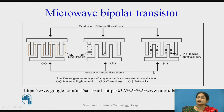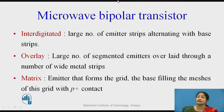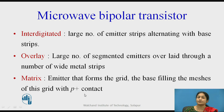These are the base metallizations and these are the emitter metallizations. In summary: in the interdigitalized geometry, large numbers of emitter strips alternate with base strips. In the overlay geometry, large numbers of segmented emitters are overlaid through the white metal strips. In the matrix geometry, the emitter forms a grid and the base fills the mesh of the grid with P-plus contacts.